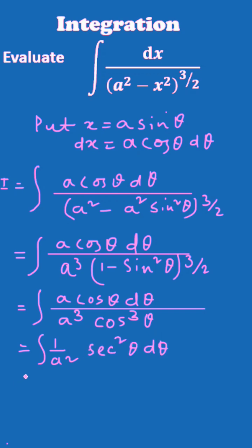Now, if you apply the formula of integration directly, you will get: the integration of sec² θ is equal to tan θ plus C.